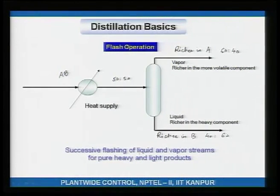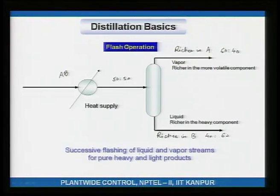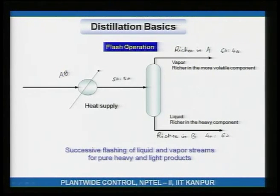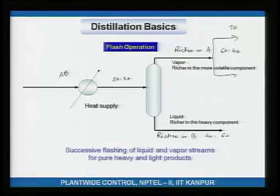We have achieved some separation: what was 50-50 is now a vapor stream richer in A and a liquid stream richer in B. If we take this vapor, liquefy it, and partially vaporize it again — performing the same flash operation — we get a vapor stream that is perhaps 70-30.